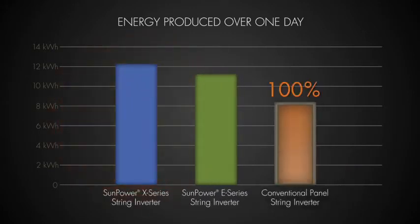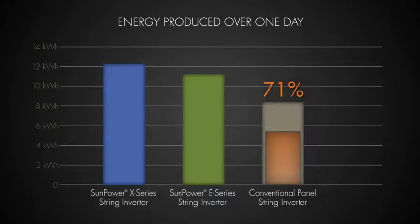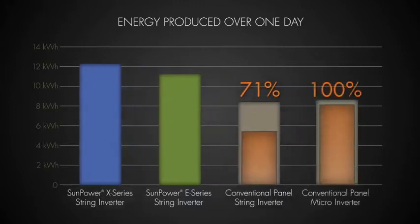Under shaded conditions, the energy production of conventional panels dropped dramatically to 71% of their unshaded capacity. Under these test conditions, microinverters made very little difference in avoiding the dramatic reduction due to shading.